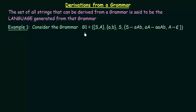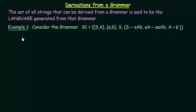Consider the grammar G1. In this grammar G1, S and A are the non-terminal symbols (variables), and a and B are the terminal symbols. S is the start symbol and we have production rules: S gives AAB, AA gives AAAB, and A gives Epsilon.